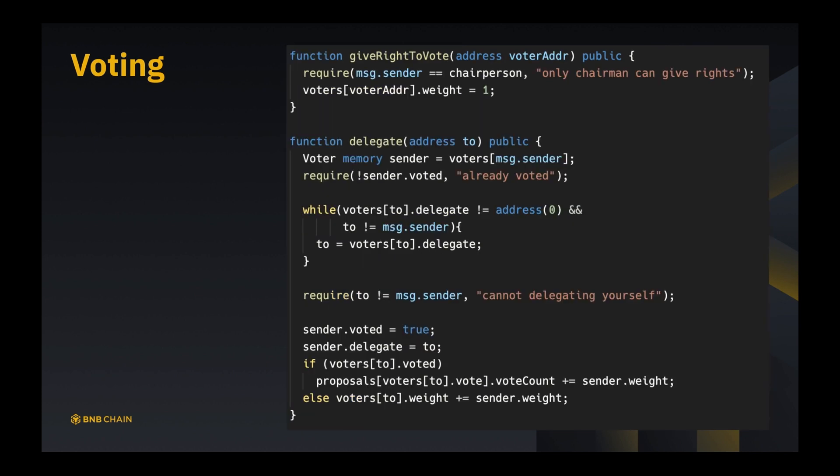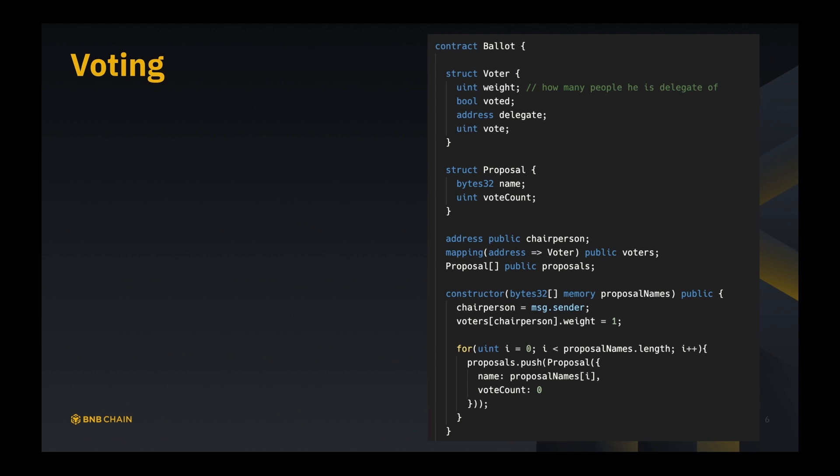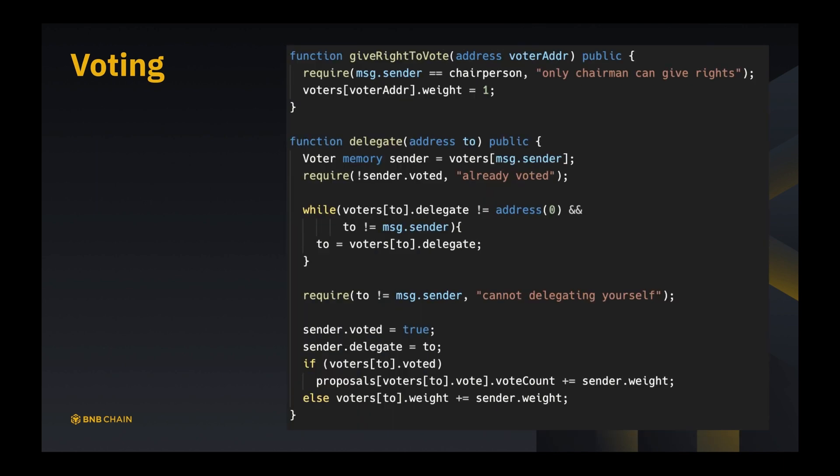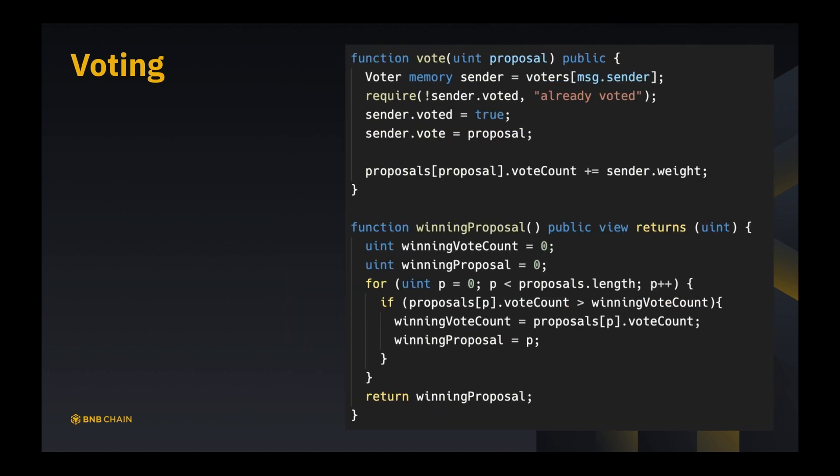That's all for the voting contract. We can quickly have an overview. We have our packed data structures to store all the related information. We have our state variables to map from address to the real instances of the voter. Upon construction, just do a bunch of initialization. We are able to give right to vote. We can do some delegation - inside delegate we need to do a lot of corner case checks and do a lot of require in order to make sure that we don't mess up anything. Finally we do some votes and report winning proposals accordingly.